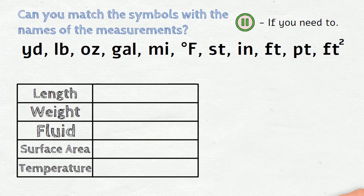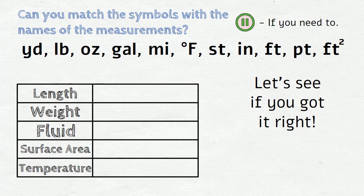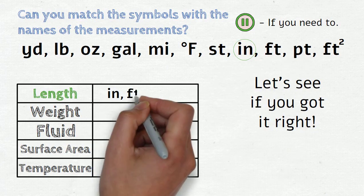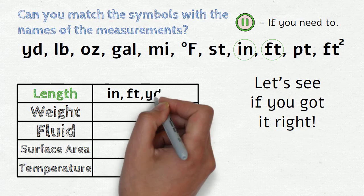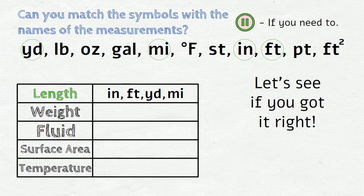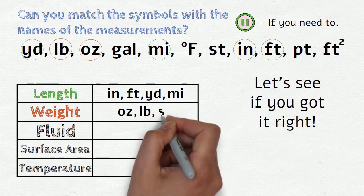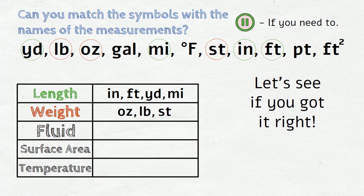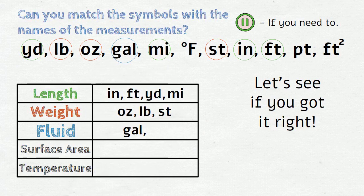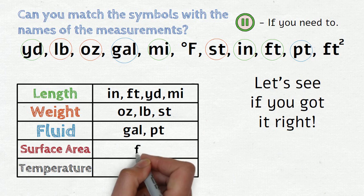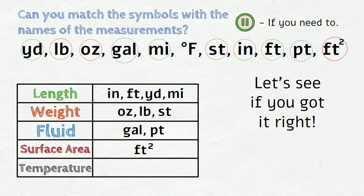Time is up. Let's see if you got it right. We have length: inch, foot, yard, mile. Weight: ounce, pound, stone. Fluid: gallon, pint. Surface area: square foot. And temperature: Fahrenheit.